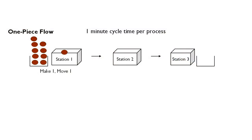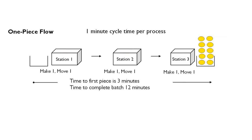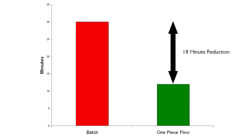Now let's look at what happens when changeover time is reduced, enabling the company to produce at a lot size of one — also referred to as make one, move one, or one-piece flow. We start with the 10 pieces before station one, but now instead of waiting for all 10 parts to be done, we make one part at station one and then move it to station two with no waiting. Once station two is done, we move the single piece to station three. A minute later, the first piece is complete and ready for delivery. The time to the first complete piece is three minutes, and the time to complete all 10 pieces is 12 minutes — in other words, the total lead time has been reduced by 18 minutes compared to the batching and queue method.